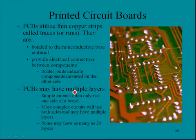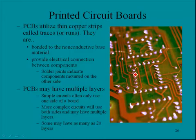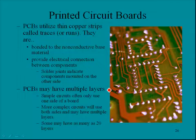PCBs may have multiple layers. Simple circuits often use only one side of the board; more complex circuits use both sides and may have multiple layers. You may notice faint copper-looking wires on this circuit board, indicating a layer below the visible one. Some boards may have as many as 20 layers, especially computer system boards.